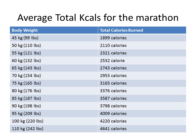We look at the average total caloric expenditure for the marathon based on body weight — from about 100 pounds all the way up to 240-250 pounds. Obviously the bigger you are, the more calories you're going to burn. Take a look at the chart to get an idea where you're at, or you can do the calculation to get an exact number for yourself.